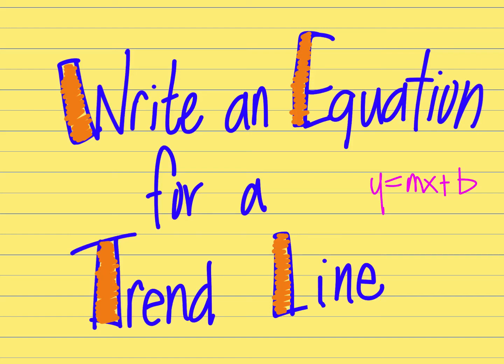Hey guys, today what we're going to talk about is how to write an equation for a trend line when you have a group of data in a scatter plot. Remember, our formula we're going to use for writing an equation is y equals mx plus b.